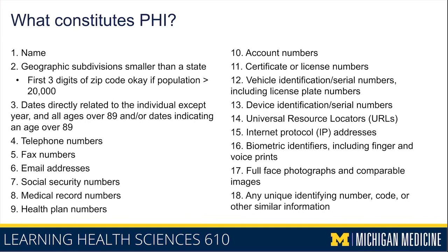According to this legislation, there are 18 elements that constitute protected health information. Some are obvious and others may not be. Your name is clearly PHI, but your zip code is also considered PHI — you're allowed to share only the first three digits if the population within those digits is larger than 20,000 people. Any dates related to a patient that are more specific than a year are also considered PHI, so dates in publicly available datasets are typically shifted by some arbitrary amount.